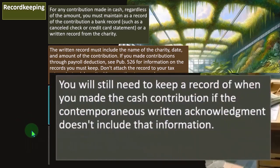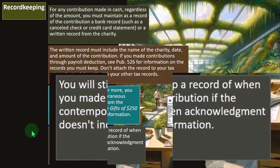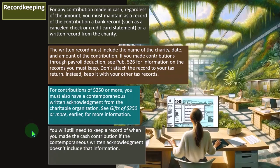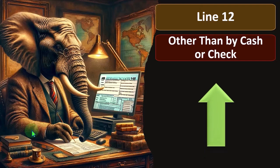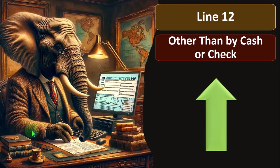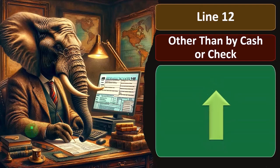You can see 'Gifts of $250 or More' earlier for more information, which we discussed. You will still need to keep a record of when you made the cash contribution if the contemporaneous written acknowledgement doesn't include that information. Next is line 12: other than by cash or check.